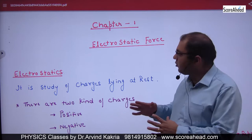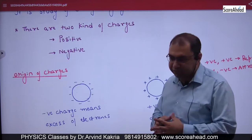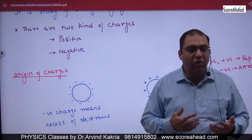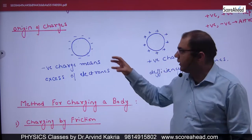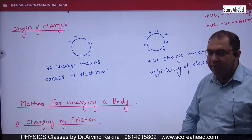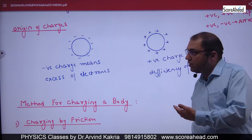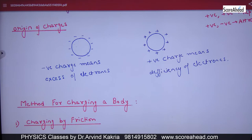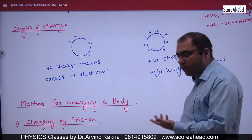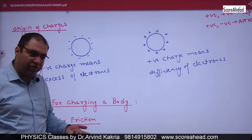In electrostatics there are two types of charges: positive and negative. The origin of charges is that if you remove some electrons from any body, there will be a deficiency — deficiency means positive charge. If you add excess electrons to any body, it will have a negative charge. So negative charge means excess of electrons, and positive charge means deficiency of electrons.